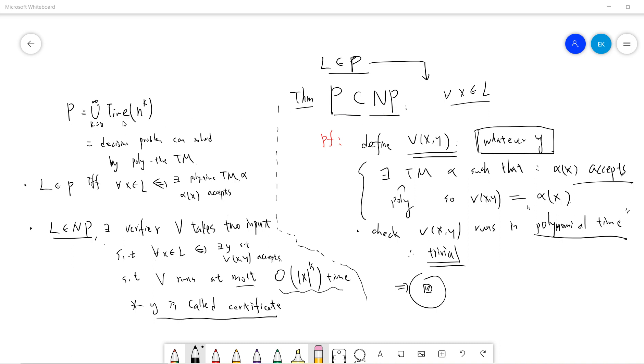Okay, so P is defined to be the polynomial time n to k, where k runs 0 to infinity. So, basically, it says that decision problem can be solved by a polynomial Turing machine.